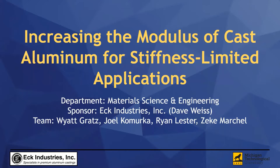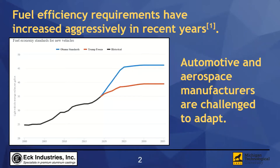Today we'd like to give you an overview of our project that worked to increase the modulus of cast aluminum for stiffness-limited applications. Looking at trends over the past few years and projections for upcoming years, it's clear that the demands for fuel efficiency in the automotive industry are growing rapidly. On the left of the screen is a figure from 2019 that shows the trajectory of government-imposed standards on fuel economy. Even though administration changes have altered the scale of the efficiency goals, it's clear that manufacturers of these transportation products are needing to innovate and adapt.